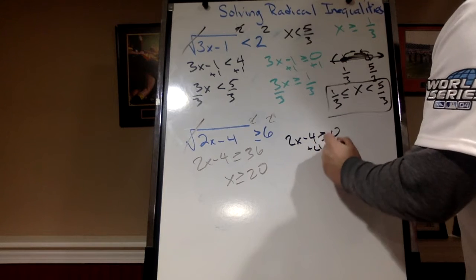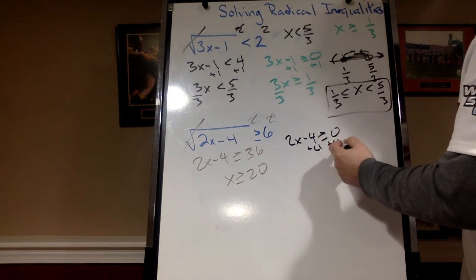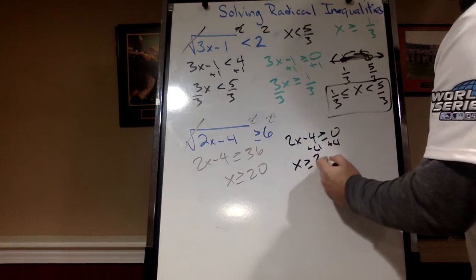Alright. Add 4. 2x is greater than or equal to 4. Divide by 2. x is greater than or equal to 2.